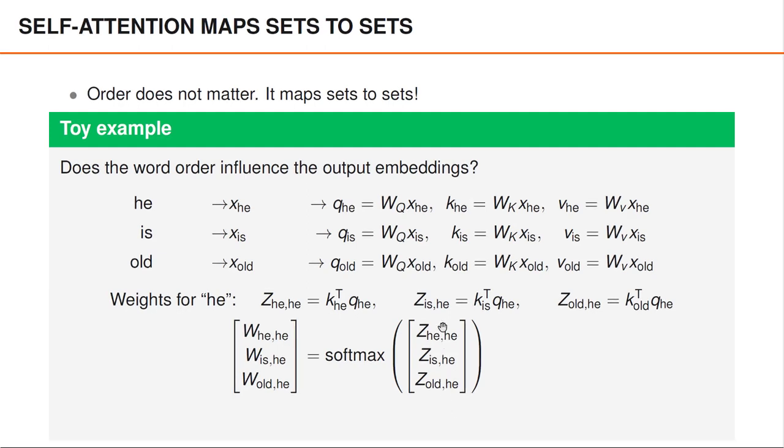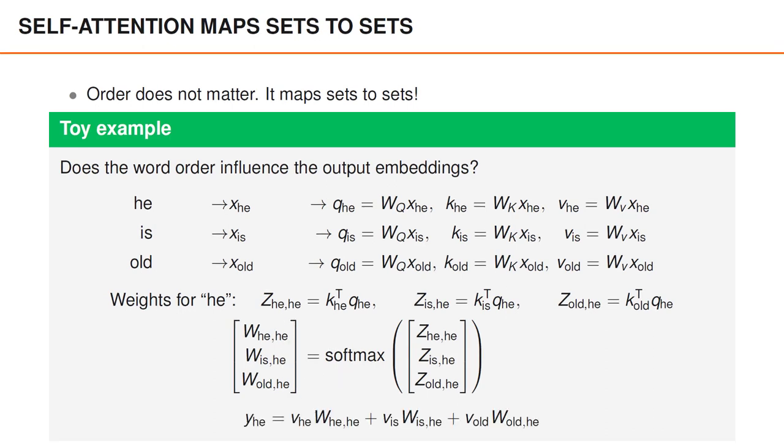These z values are then passed through a softmax to obtain the corresponding weights. Finally we compute a new word embedding for the word he by taking a weighted average using the above weights and the value vectors for the different words. I hope that you can see that these equations are analogous to the equations presented previously with the minor difference that we now use words as indices.